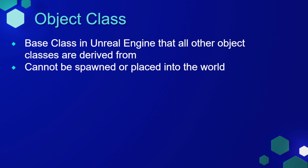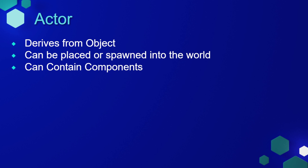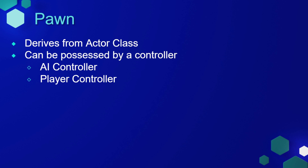So just to quickly review: the Object Class is the base class in Unreal Engine that all other objects are derived from, and it cannot be spawned or placed into the world. The Actor Class derives from Object, and it can be placed or spawned into the world, controlled, and it can contain components. The Pawn Class derives from the Actor Class, and it can be possessed by a controller — either an AI controller or a player controller. We saw this a couple lessons ago when we took control of our player pawn.